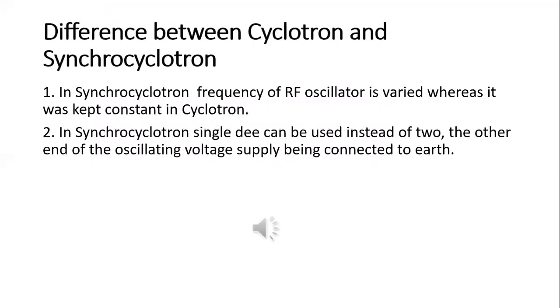Now let's discuss the difference between cyclotron and synchrocyclotron. In cyclotron we use a fixed frequency alternating current, but in synchrocyclotron we use variable frequency alternating current. In cyclotron there are two dees, but in synchrocyclotron only one dee is there and the other part is connected to earth. This is the main difference.